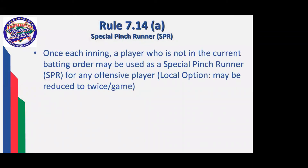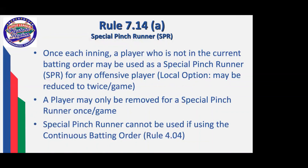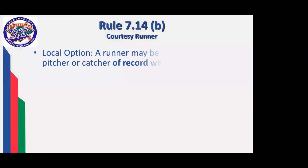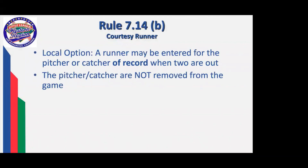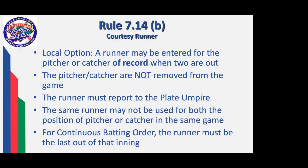Special pinch runner: in order to encourage participation, Little League has set up a rule that a player who's not in the current batting order may be used as a special pinch runner for any offensive player. There is a local option that allows this to be reduced to twice per game instead of every inning. A player who is on the bases may be removed only once per game for a special pinch runner, and a special pinch runner is not allowed if you're using continuous batting order because everybody is in the game. Courtesy runners: once again a local option designed to speed the game up. A runner may be entered for the pitcher or catcher of record when two are out. The runner must report to the plate umpire so the plate umpire understands whether it's a special pinch runner, a courtesy runner, or a substitution. The same runner may not be used for both positions of pitcher or catcher in the same game. If you're using continuous batting order, the runner is the last out of that given inning.